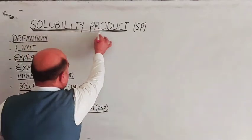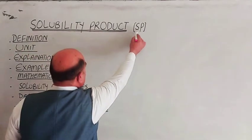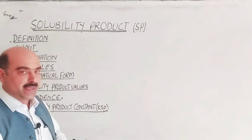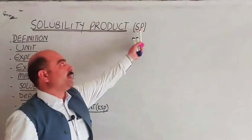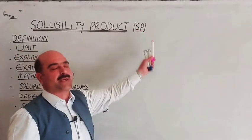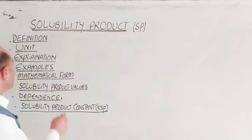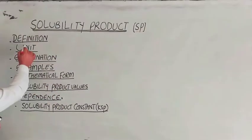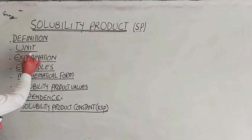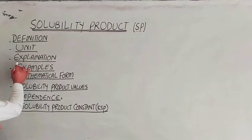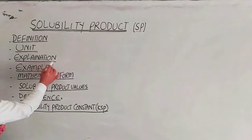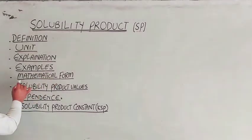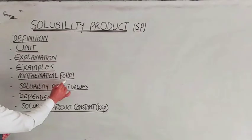What is solubility product, which is symbolically represented by S.P.? S stands for solubility and P stands for product. I will discuss and define it with the help of examples, and also explain its mathematical form.